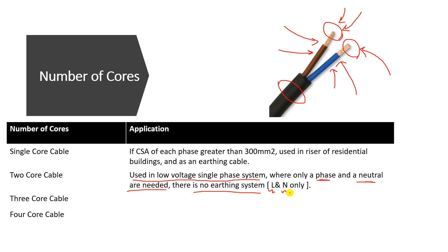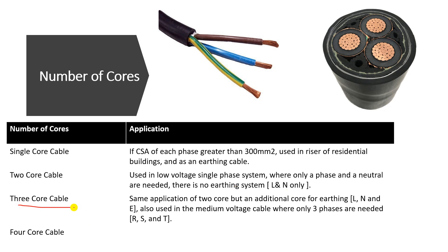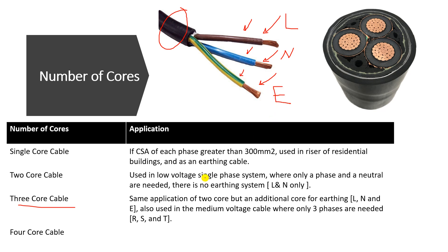The third type is the three core cable. There are two types. The first, used in distribution networks, has three cores inside one large cable. One core is for the line voltage, one for the neutral, and the third — the green-yellow core — is a protective or earth conductor. So we have line, neutral, and earth. This is the same application as the two core cable but with an additional earth core.